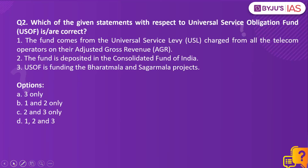Moving on to question number 2. Which of the given statements with respect to Universal Service Obligation Fund is or are correct? Statement 1: The fund comes from Universal Service Levy charged from all telecom operators on their adjusted gross revenue. Statement 2: The fund is deposited in the Consolidated Fund of India. Statement 3: USOF is funding the Bharat Mala and Sagar Mala projects.